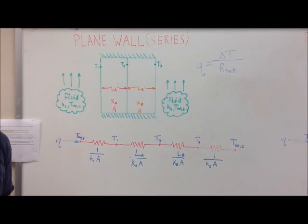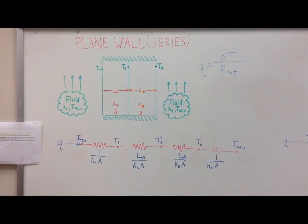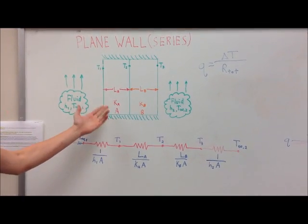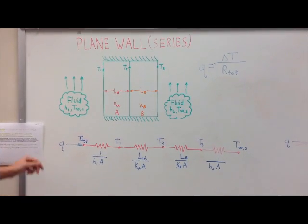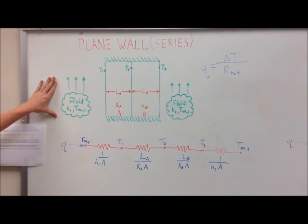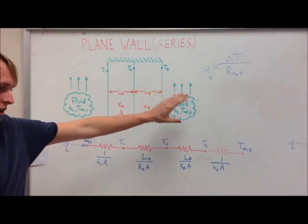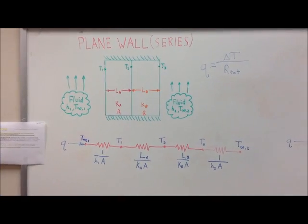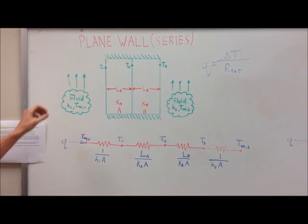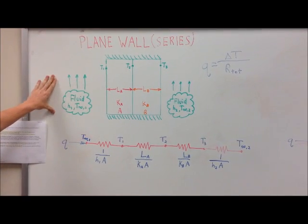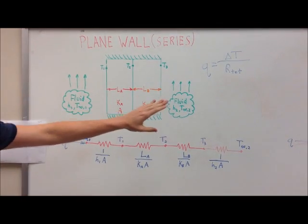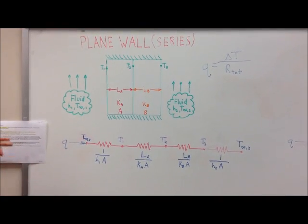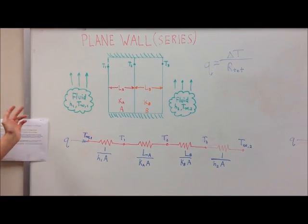Our first example is a plane wall in series. It deals with two mediums with different lengths and thermal conductivities, A and B. You also have hot fluid on the left and a cooler fluid on the right. The two mediums experience convection effects from the ambient air on each side as well as conduction effects through the system, going from left to right, from hot to cool.